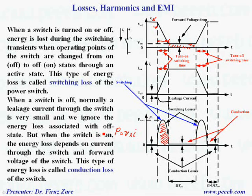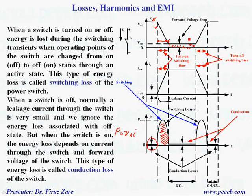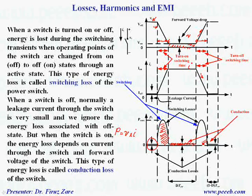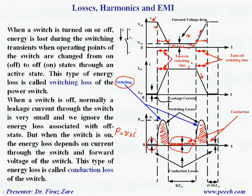When the switch is off, the leakage current through the switch is normally zero, so we do not consider conduction loss when the switch is off. However, the voltage drop across the switch is not negligible, so voltage times current creates conduction loss. The same scenario happens when the switch is getting off — over that switching time, the voltage across the switch is increasing while the current is decreasing. So these are the total switching losses, plus the conduction loss, and finally we can define the total loss as the sum of switching loss and conduction loss.